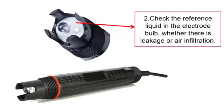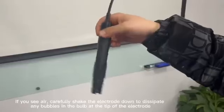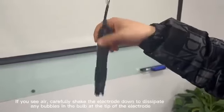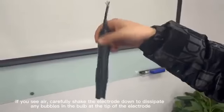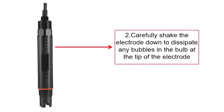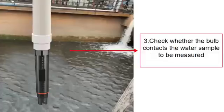If you see air, carefully shake the electrode down to dissipate any bubbles in the bulb at the tip of the electrode. Then check whether the bulb contacts the water sample to be measured.